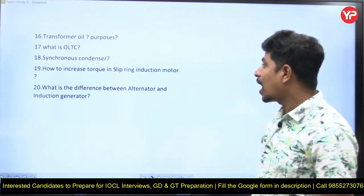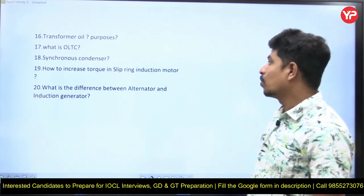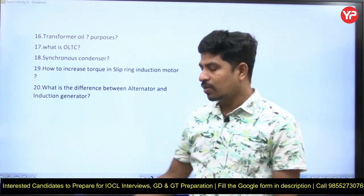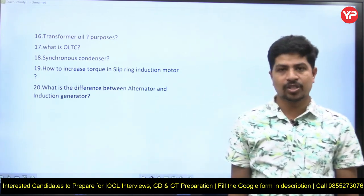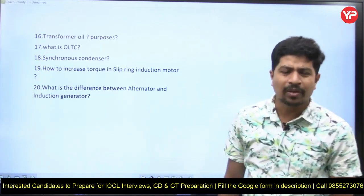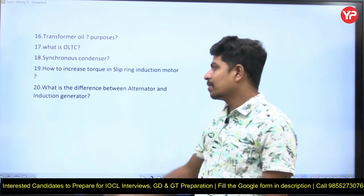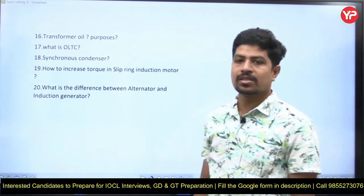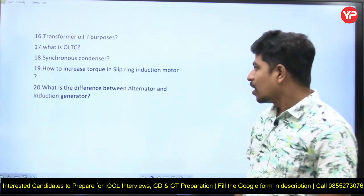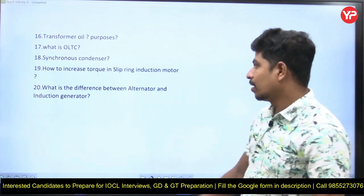The next question is how to increase torque in a slip ring induction motor. We have two types of induction motors — slip ring and squirrel cage. In a slip ring induction motor, torque can be increased with the help of resistance starting by adding external resistance to the rotor circuit.